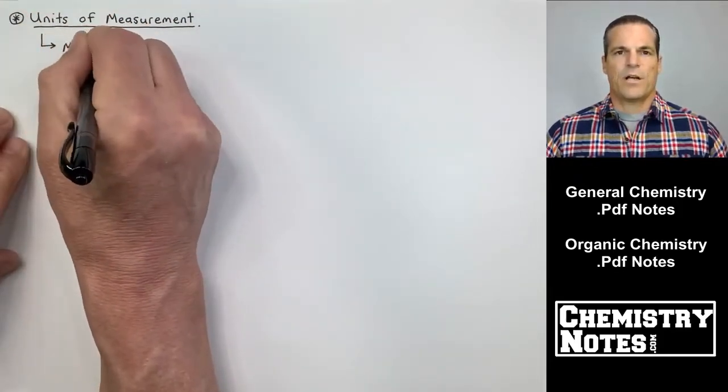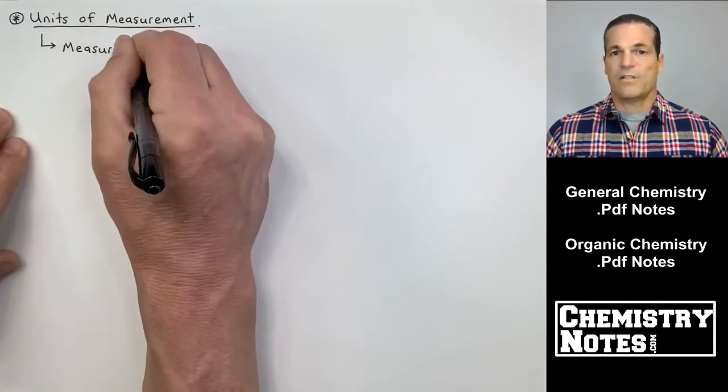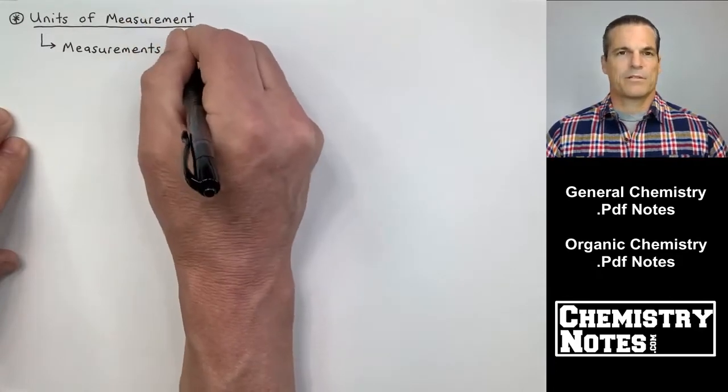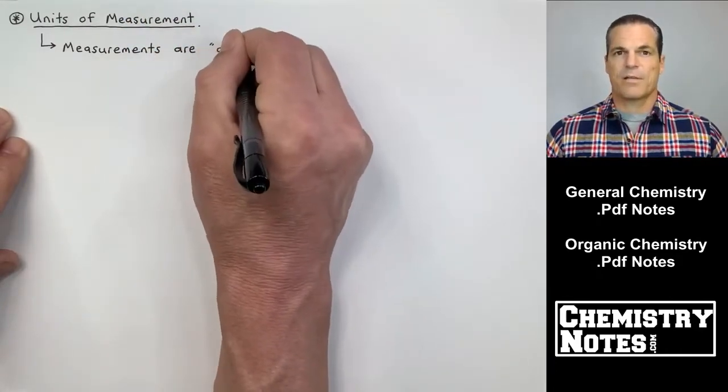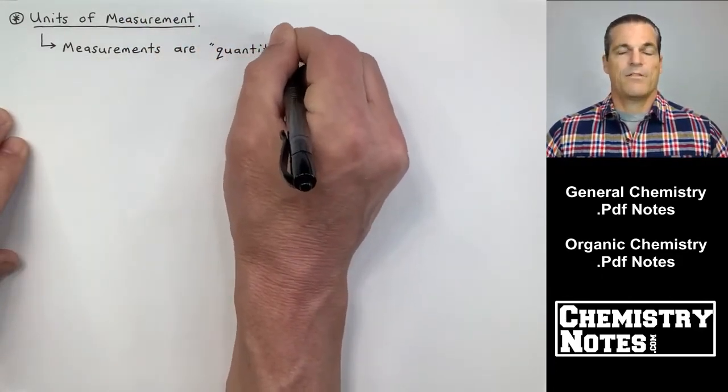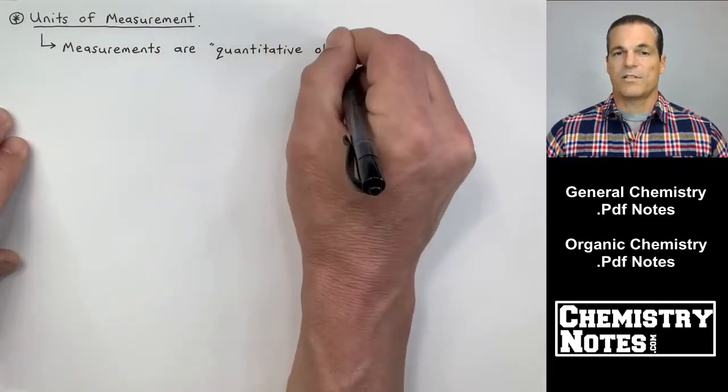In the last video we talked primarily about scientific method. We also talked about the macroscopic versus the microscopic view. This video we're going to start talking about units of measurement.